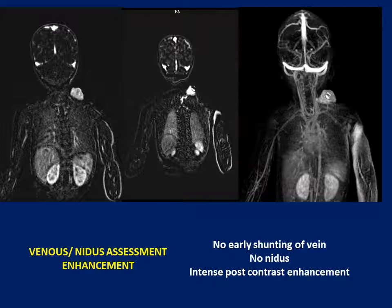On the venous side, there is definitely a venous component seen within the mass lesion, but venous outflow was only seen in the later phase — there was no early shunting of the vein. Early shunting occurs when the vein opacifies during the arterial phase, which was not seen in this patient. There was intense post-contrast enhancement documented, with no calcification.